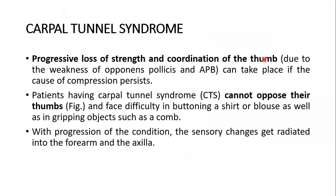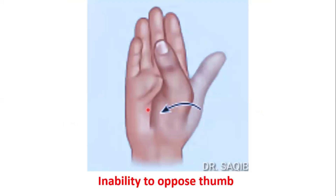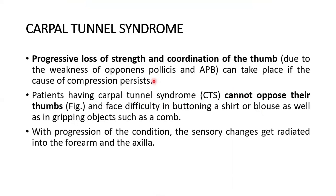Progressive loss of strength and coordination of the thumb, due to weakness of opponens pollicis and abductor pollicis brevis, can occur if the cause of compression persists. Patients with carpal tunnel syndrome cannot oppose their thumb and face difficulty buttoning a shirt or gripping objects such as a comb. With progression, sensory changes can radiate into the forearm and axilla.